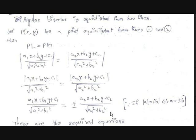Taking the plus sign gives one equation and taking the negative sign gives another equation — these are the two angular bisectors. Okay guys, this is it for today's video. I hope you enjoyed it. If you have any doubts, comment down below and I will answer them in the next video.